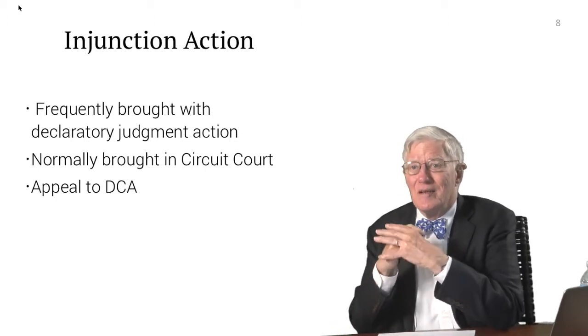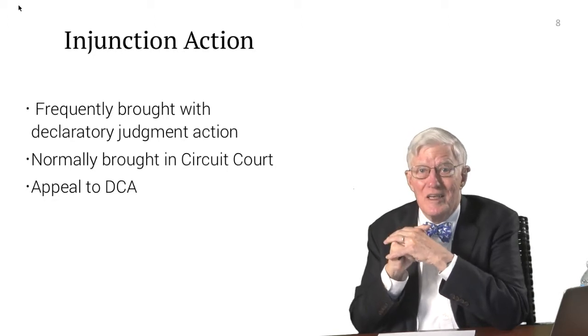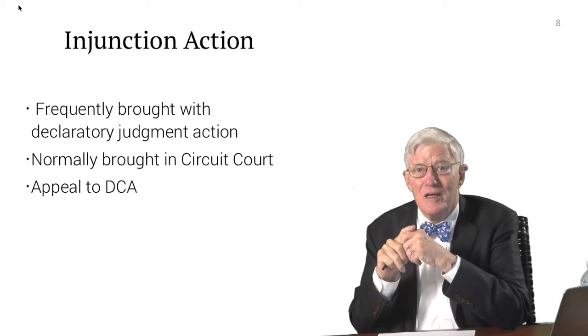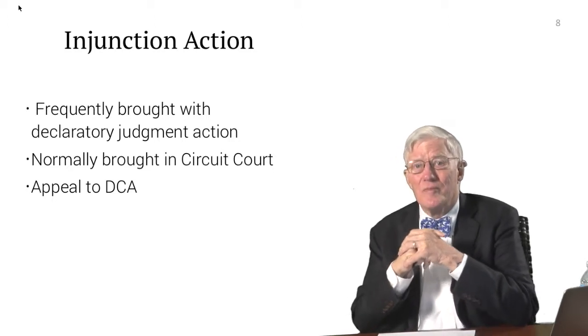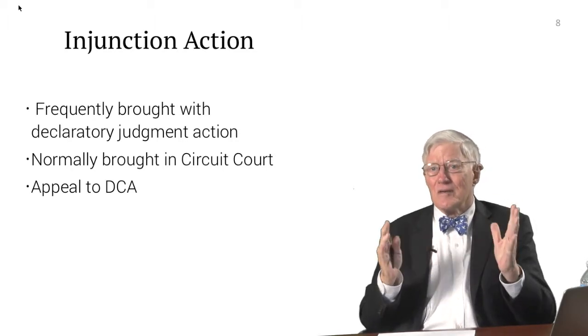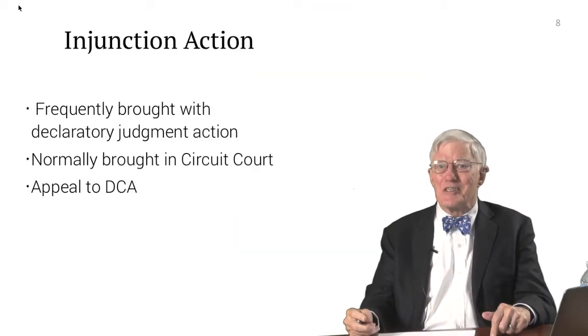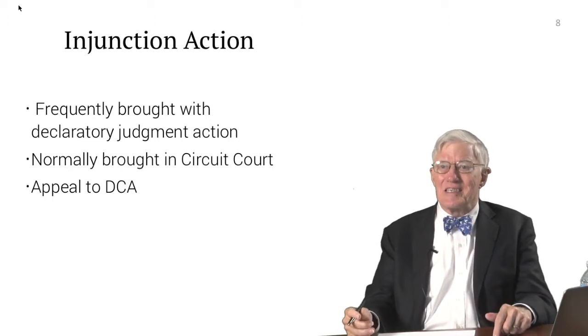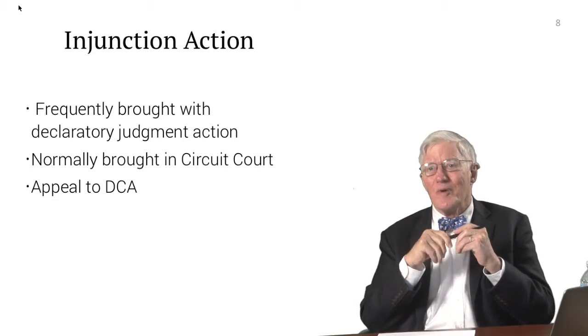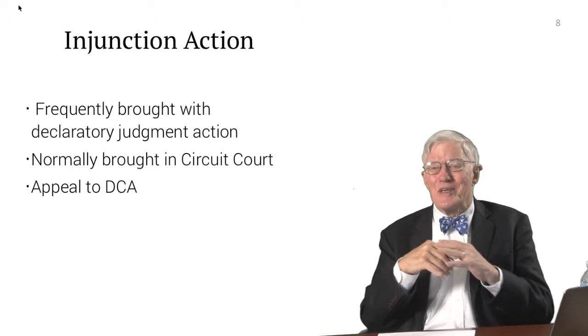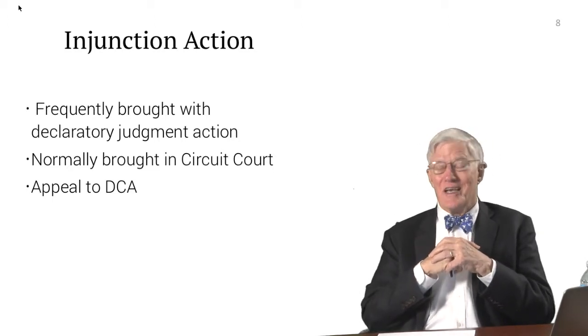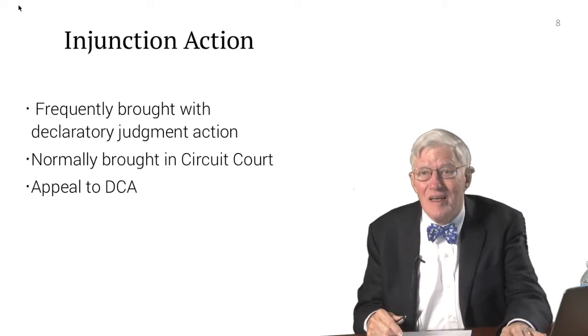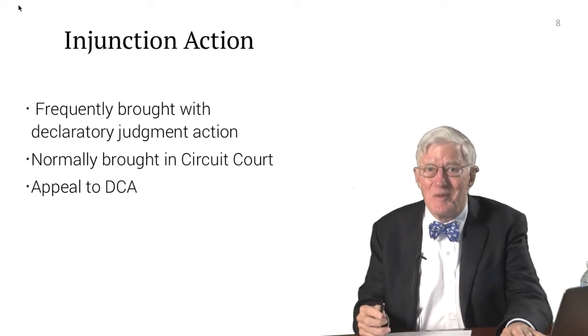The injunction action is the way a great number of constitutional questions get raised, frequently brought along with a declaratory judgment action. It's normally brought in the circuit court and then appealed to the District Court of Appeal. Large numbers of these cases arise in the 1st District Court of Appeal, sitting in Tallahassee, Florida, because most state agencies are located there and venue statutes require actions be brought against a state agency where they are located. So while you'll find some DCA decisions on state constitutional issues in other districts, the 1st District Court of Appeal has the largest numbers of these cases.